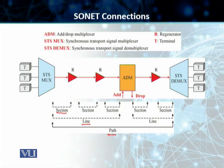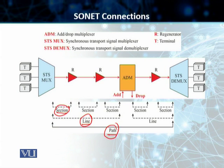In later discussions, we'll talk about the different SONET protocol layers. We've got four layers that we will talk about, and three of those four layers at the data link level are actually named after these three different connections in SONET. Each of those layers takes care of the header, encapsulation, framing, and other functions based on whether we have a path, a line connection, or a section as our connection.